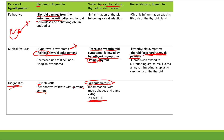It feels like a rock when you examine the neck. This fibrosis can extend from the thyroid to surrounding structures including the airway, mimicking anaplastic carcinoma of the thyroid — a poorly differentiated cancer that also spreads locally. You differentiate Riedel's from anaplastic carcinoma because Riedel's patients are younger and there are no malignant cells.